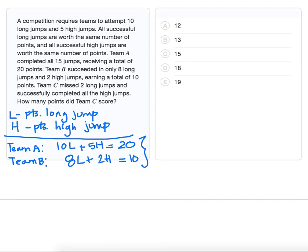Let's start by dividing the first equation by 5 so that we can then solve for H. If we divide the first equation by 5, that's going to give us 2L plus H equals 4. Now we can easily solve for H. H is going to be 4 minus 2L.